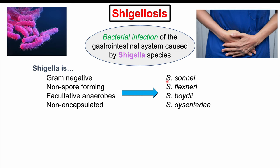Shigella sonnei is the most common Shigella species in the United States. Shigella flexneri is the most common cause of shigellosis in developing countries. So the prevalence of each of these bacterial species is different depending on where you are in the world.